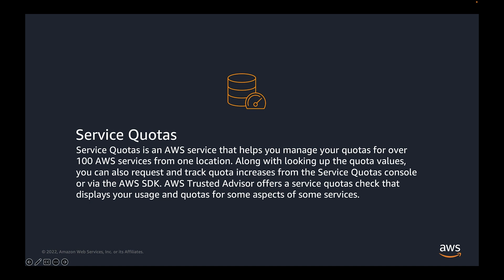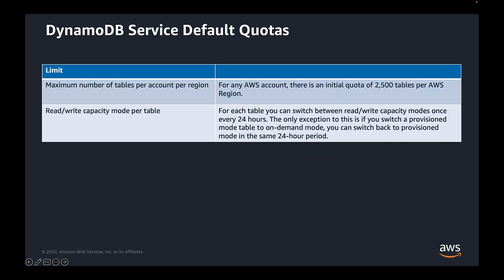Service Quotas is an AWS service that helps you manage your quotas for over 100 AWS services from one location. Along with looking up the quota values, you can also request and track quota increases from the Service Quotas console or via the AWS SDK. AWS Trusted Advisor offers service quota checks that display your usage and quotas for some aspects of these services. Let's look at the service quotas relevant to DynamoDB tables.